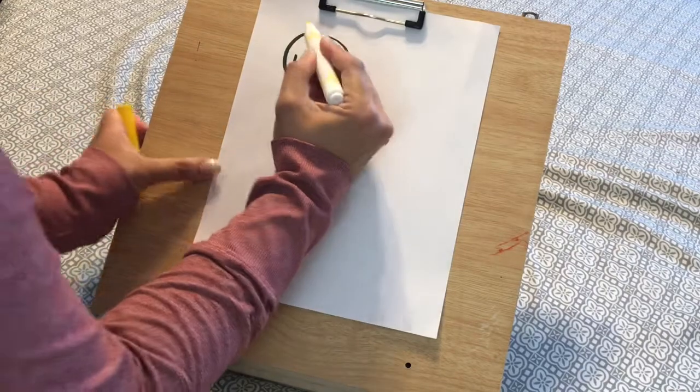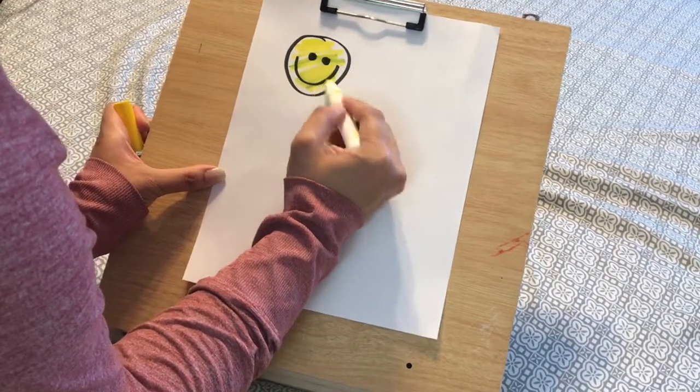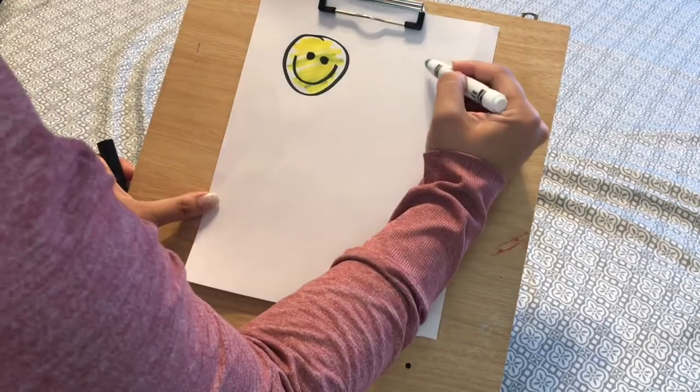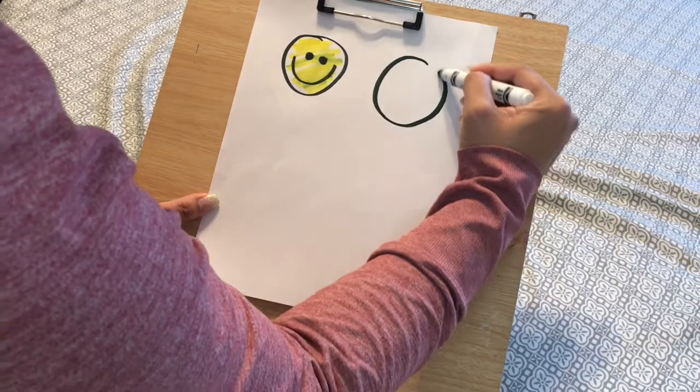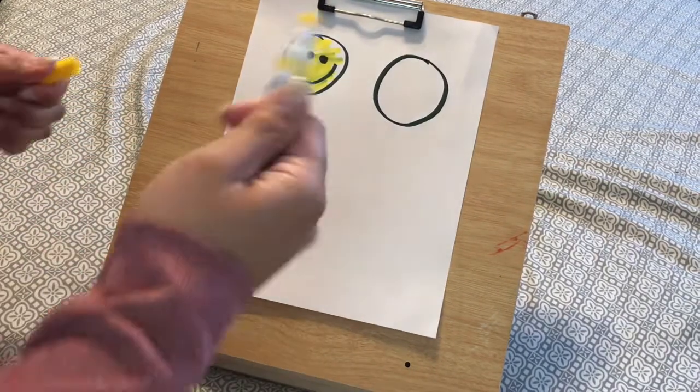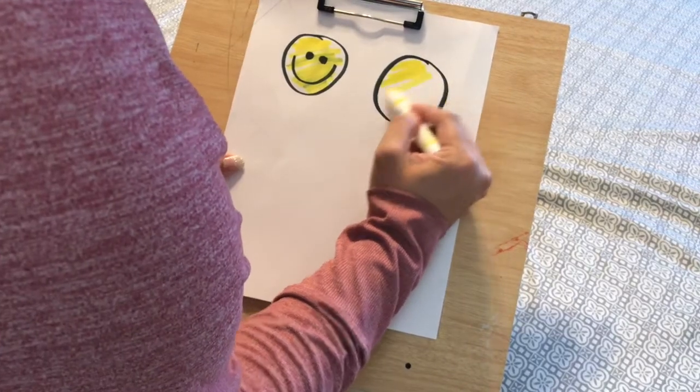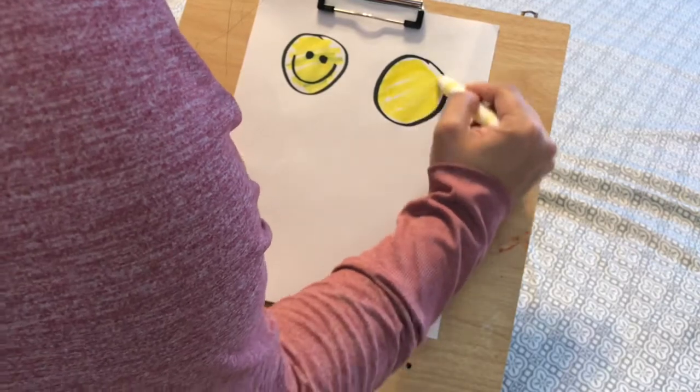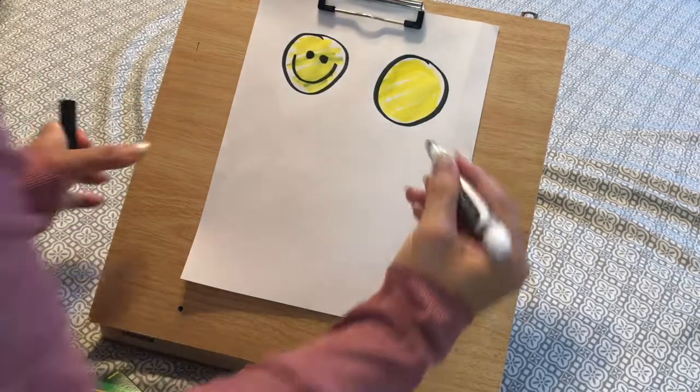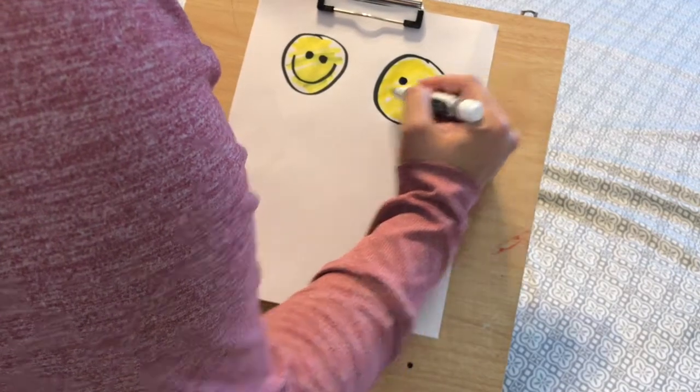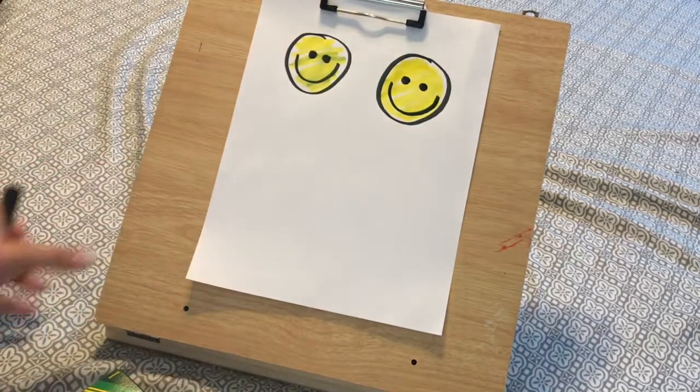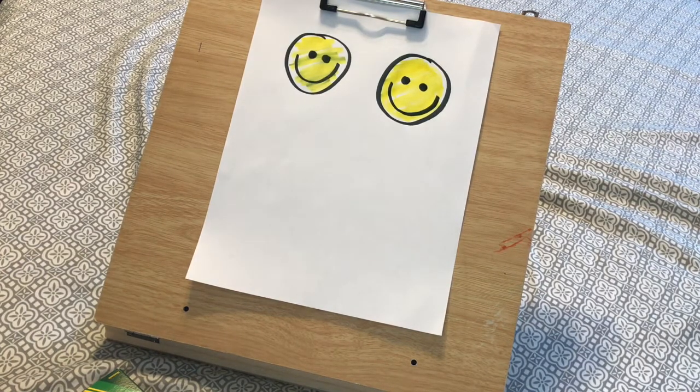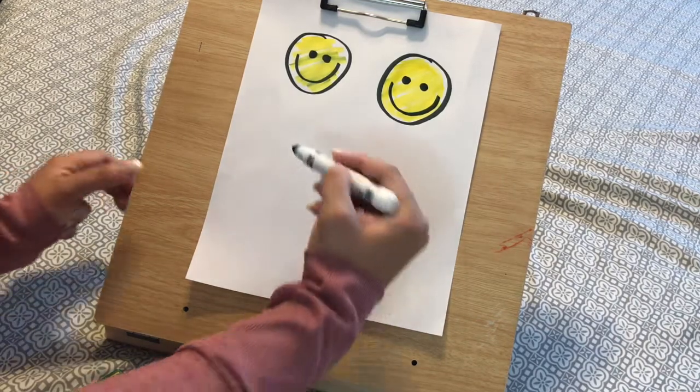If you have a marker, you can color it in. I probably should have colored before, so I'll do that again. Circle, I want to do a yellow smiley face. Dot, dot, curved line like a C. You can also do a sun in a circle.